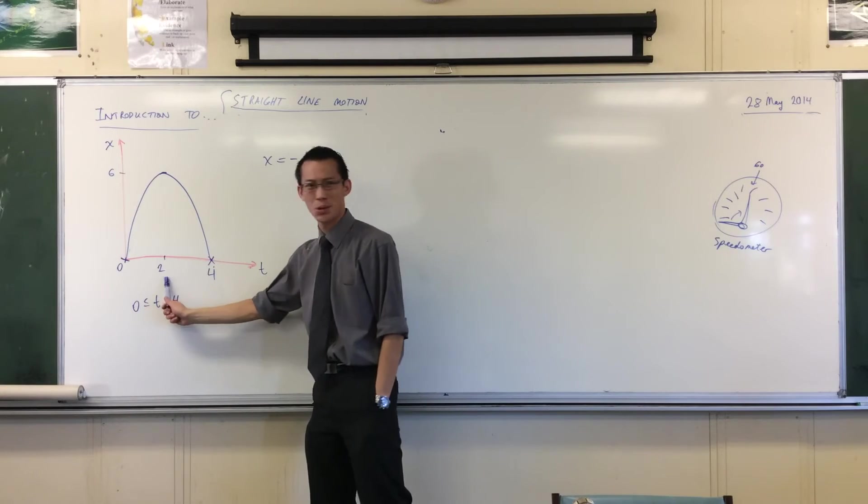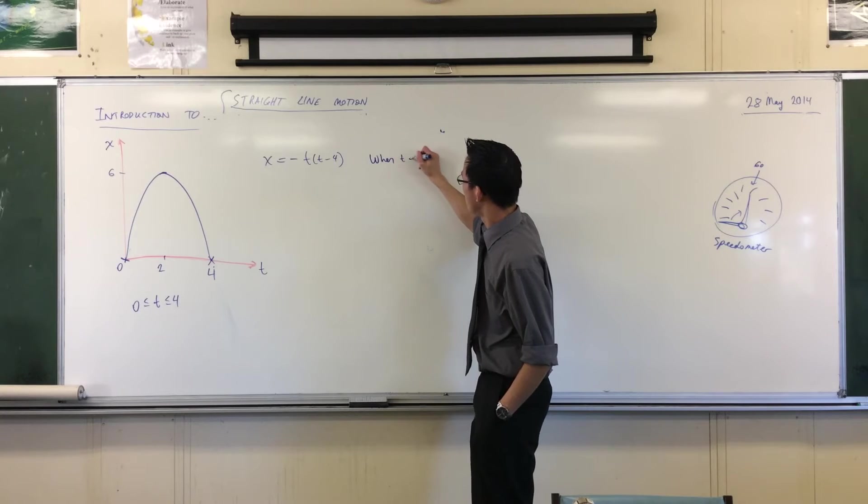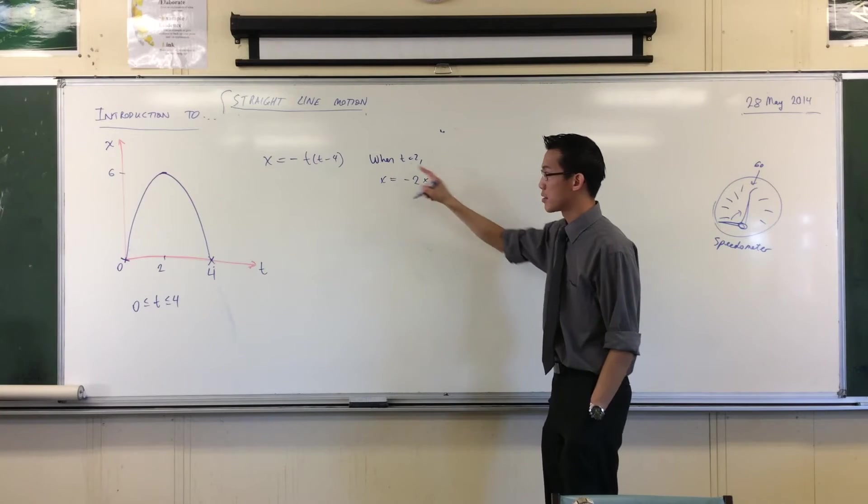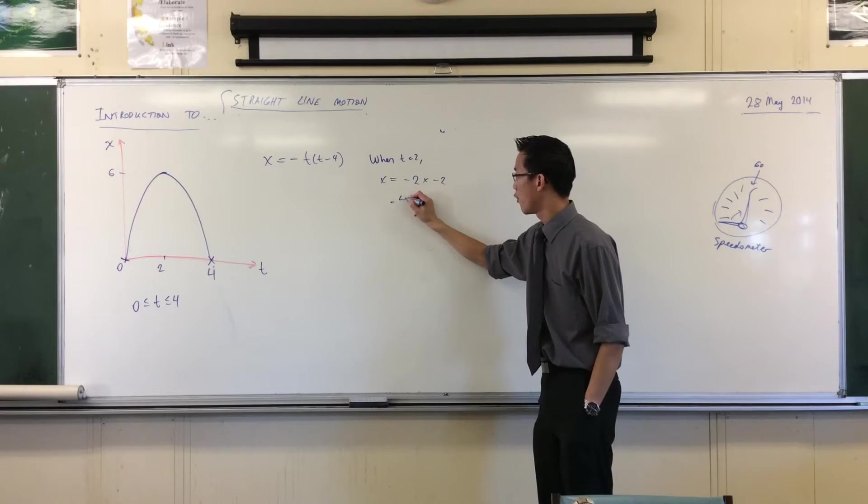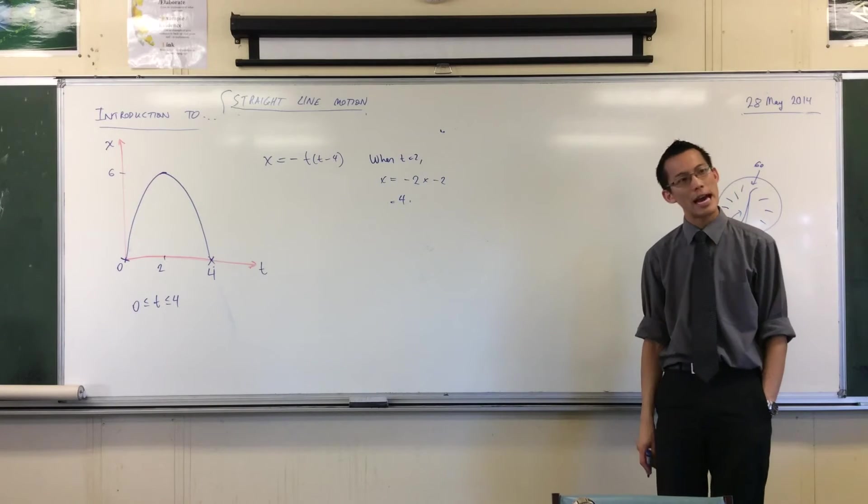But time equals 2. What happens when time equals 2? You get x equals minus 2 times 2 minus 4, which is also minus 2. You get 4. That's not as high as I want to go, is it? So how do I change it?